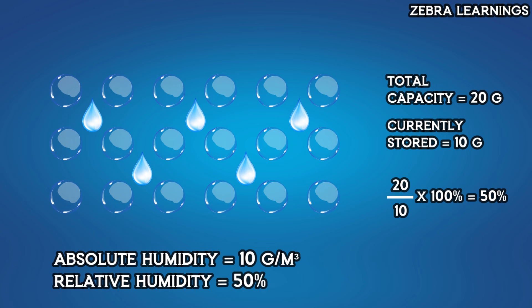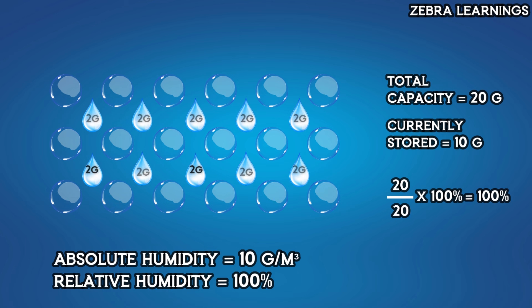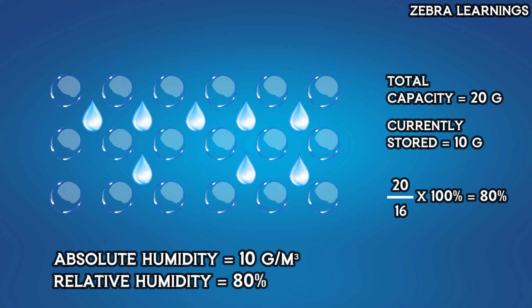If this area had 20 grams of water vapor, its relative humidity would be 100%. If it had 16 grams of water vapor, its relative humidity would be 80%.